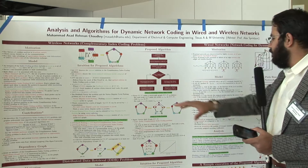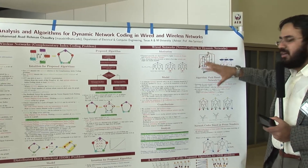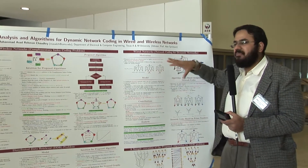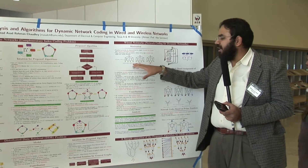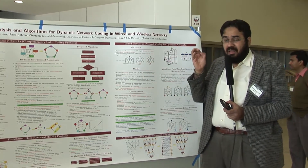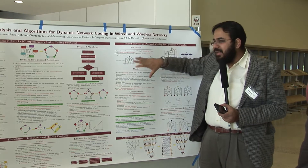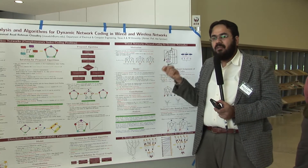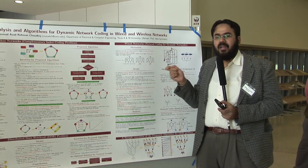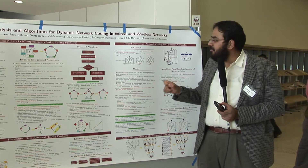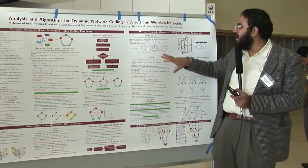The second part of my work deals with network coding for dynamic wired networks. We have a multicast network where the network is dynamic — links can go up and down, and terminals can join or leave. This dynamic nature causes a previously valid network code to become infeasible, meaning not all terminals can decode their packets. The objective is to modify the existing network code such that all terminals can again decode what they need, while minimizing the number of changes to the existing code.